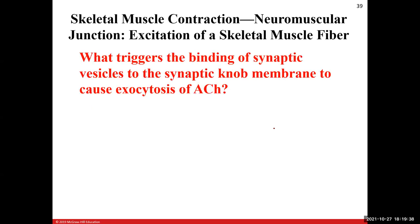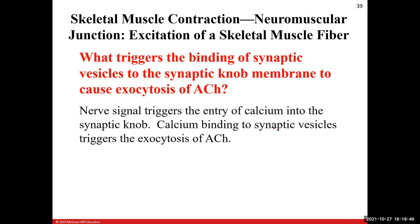Review question: What triggers the binding of synaptic vesicles to the synaptic knob membrane to cause exocytosis of acetylcholine? Our action potential — our nerve signal — travels down to the transmissive end, to the synaptic knob, and stimulates those voltage-gated calcium channels to open. Calcium enters the cell, binds on the synaptic vesicles, and triggers exocytosis of acetylcholine into the synaptic cleft.